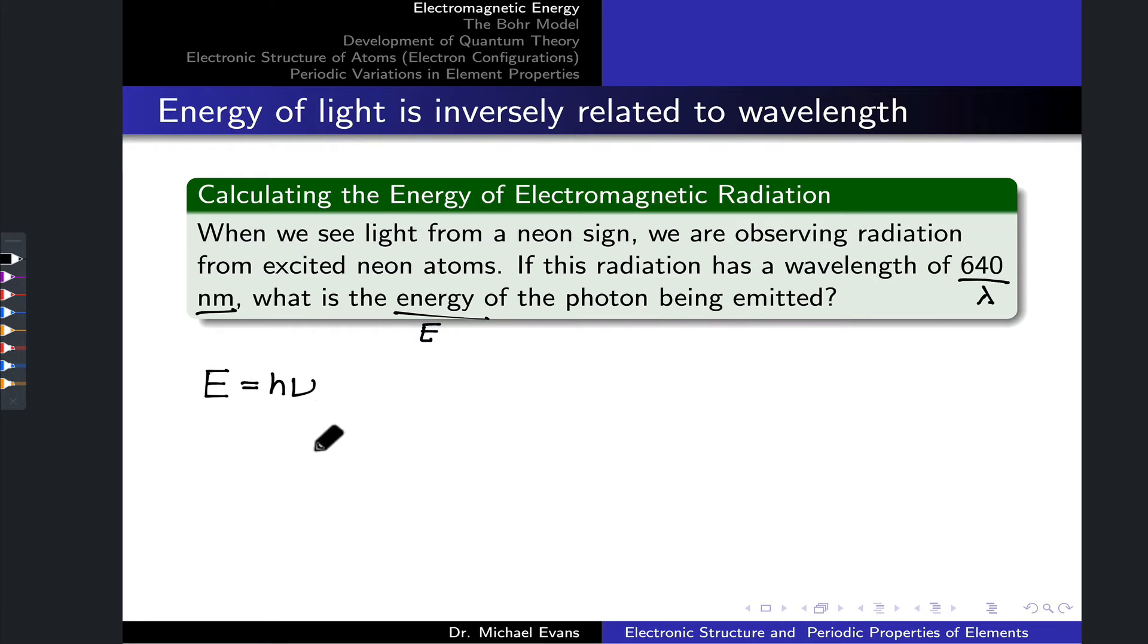To make the wavelength appear in this equation, we can recall the relationship between frequency and wavelength using the speed of light as a bridging quantity. The speed of light is equal to the product of the wavelength of a light wave and its frequency. Another way to write this is that the frequency is equal to c divided by the wavelength. Now we can substitute c over lambda for ν to arrive at an expression for the energy: E equals hc divided by lambda.